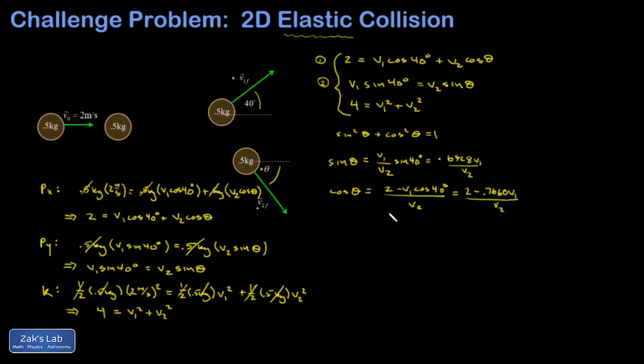Now I apply my trig identity - the square of this equation plus the square of that equation must equal one. So I have squaring 0.6428 v1, I get 0.413 v1 squared divided by v2 squared, and I add to that the square of cos theta: 2 minus 0.7660 v1 squared over v2 squared, and that's got to equal one.